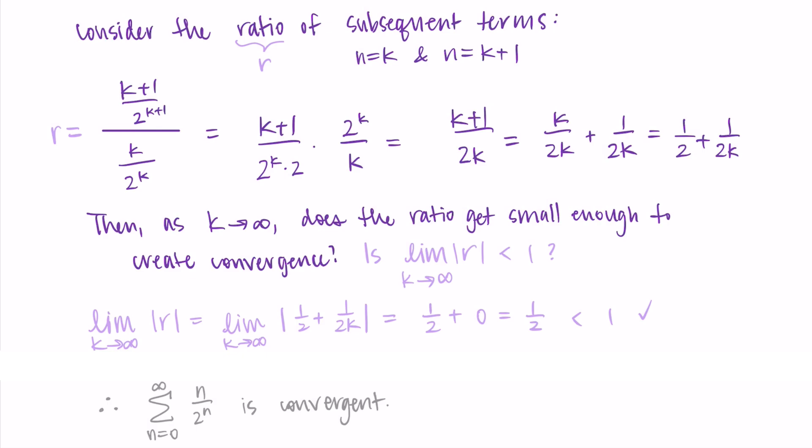We can't determine exactly what it converges to using this method, but we can at least conclude that yes, it converges. A quick note: to do this formally, we use absolute values around r. One issue is that mathematicians often move absolute values around without explaining why. The main idea is that it doesn't matter most of the time, since k is going to positive infinity, so everything is already positive. Absolute value does nothing to positive values. The world of series gets a lot deeper than what we're covering, and I don't want to do it wrong now and cause problems later.